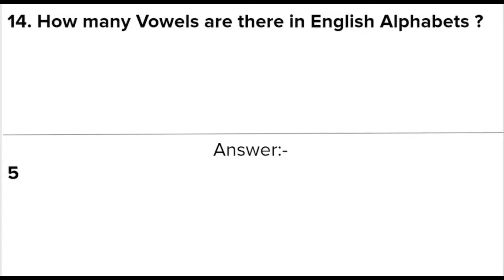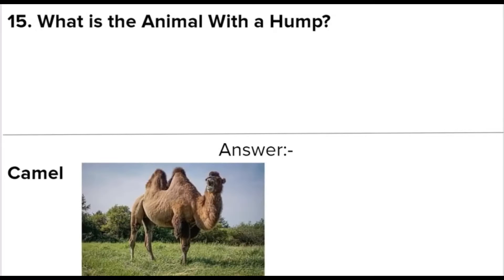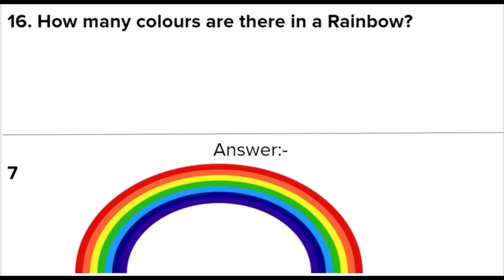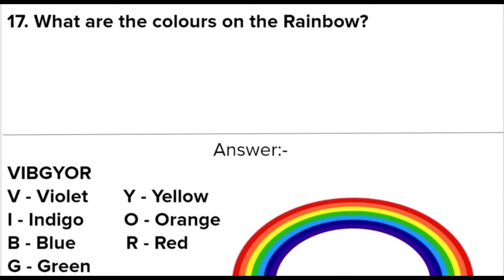Next question: How many vowels are there in the English alphabets? Answer: 5. Next question: What is the animal with the hump? Answer: Camel. Next question: How many colors are there in a rainbow? Answer: 7. Next question: What are the colors of the rainbow?